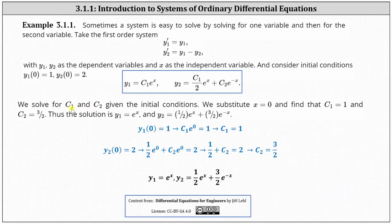Now we solve for c1 and c2, given the initial conditions. The first initial condition was y1 of 0 equals 1. So using our solution y1 equals c1 e to the x, we substitute 0 for x and set the function value equal to 1. This gives us c1 e to the 0 equals 1, giving us c1 equals 1. Because c1 is equal to 1, we now know y1 is equal to e to the x.